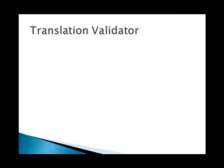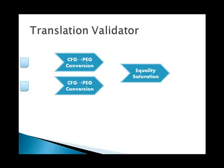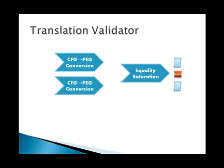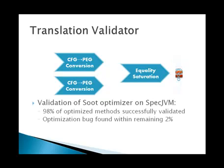Our approach also applies to translation validation using the following architecture. We take two programs — the input and output of some optimizer — and convert them both to PEGs. We then send both of these PEGs together to equality saturation and check to see if we found them to be equivalent. Using this approach, we were able to validate 98% of the spec JVM methods optimized by Soot, another Java bytecode optimizer. Within the remaining 2%, we actually found a bug in Soot's optimizations involving incorrect loop invariant code motion.